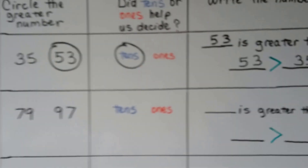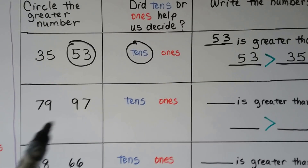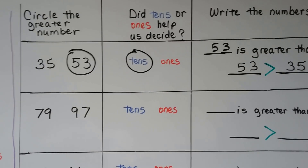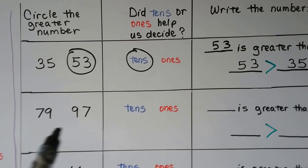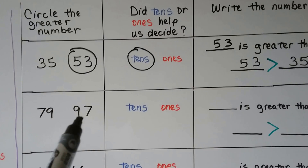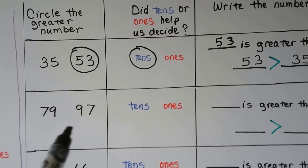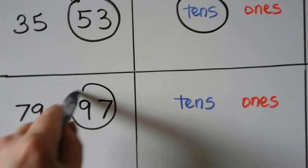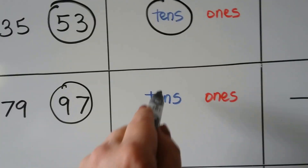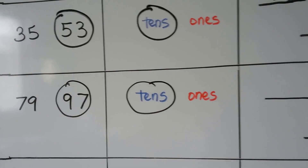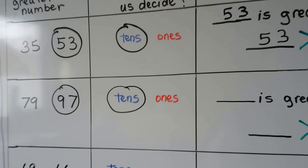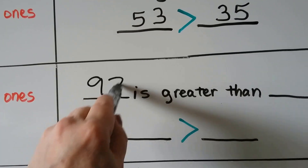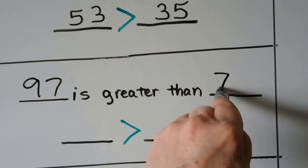Let's try the next one. Which is the greater number, 79 or 97? We start by looking at the tens place. This has 7 tens; this has 9 tens. 9 tens is more than 7 tens, so 97 is the greater number. The tens helped us to decide. 97 is greater than 79.